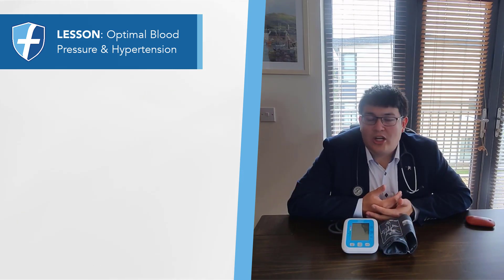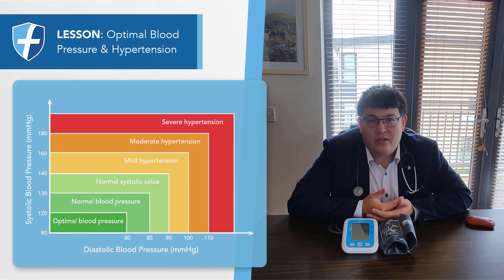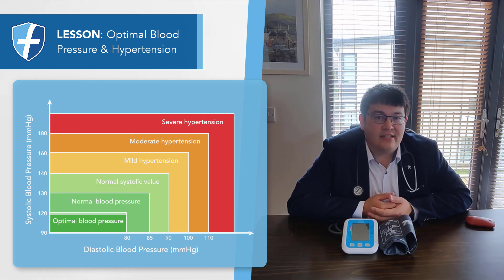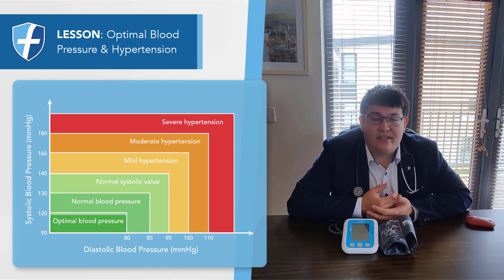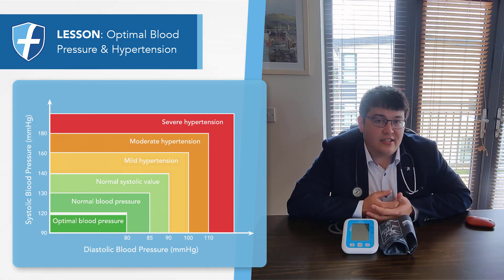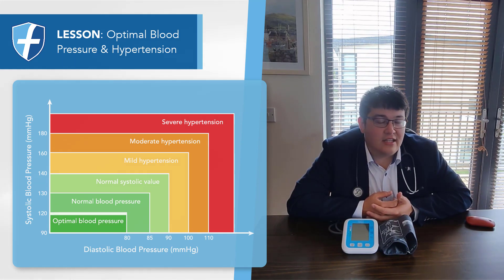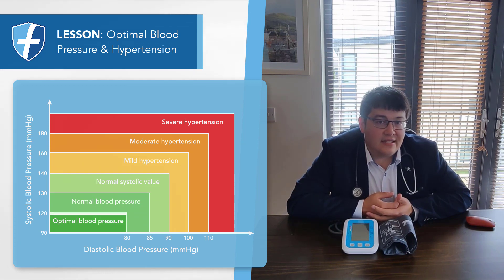When we talk about normal blood pressure, we usually say that it's 120 over 80 millimeters of mercury. As you can see in this table, normal blood pressure is having a systolic blood pressure between 90 and 119 mmHg or a diastolic blood pressure of between 60 and 79 mmHg.